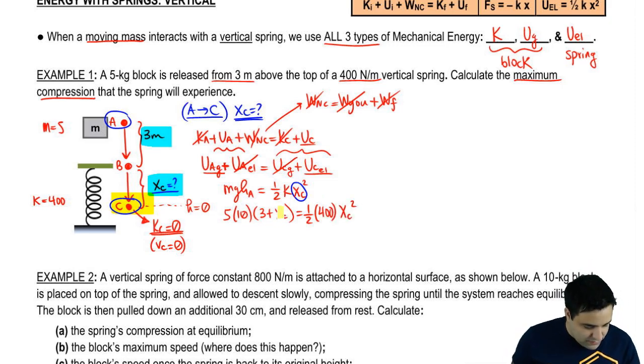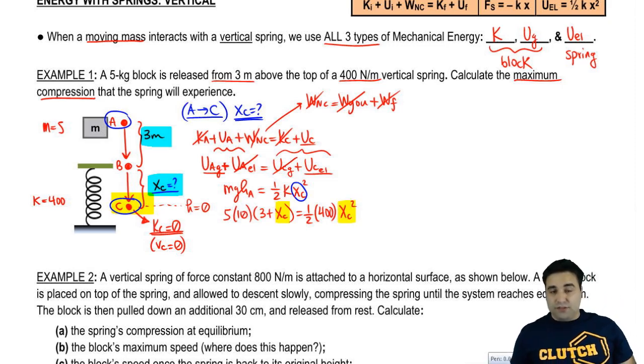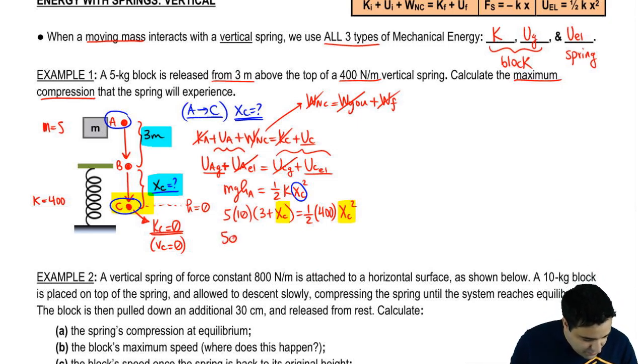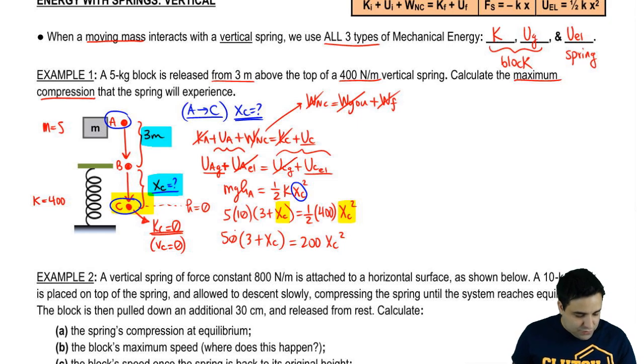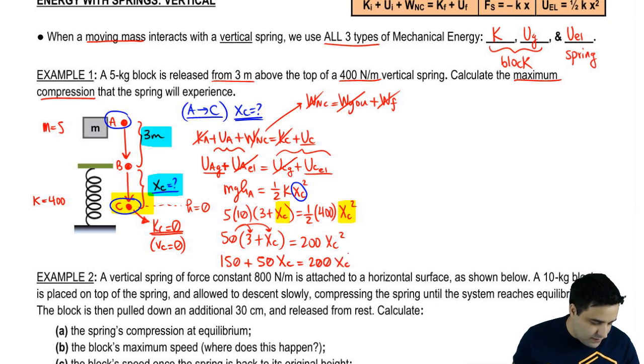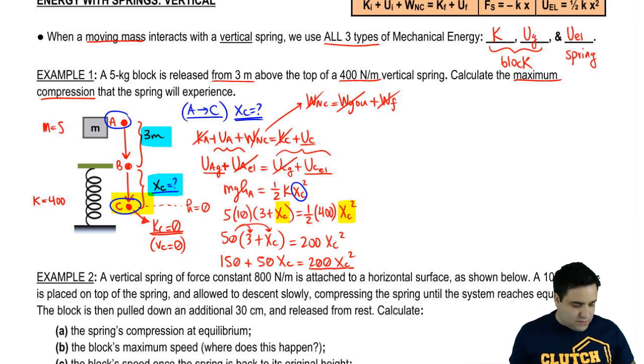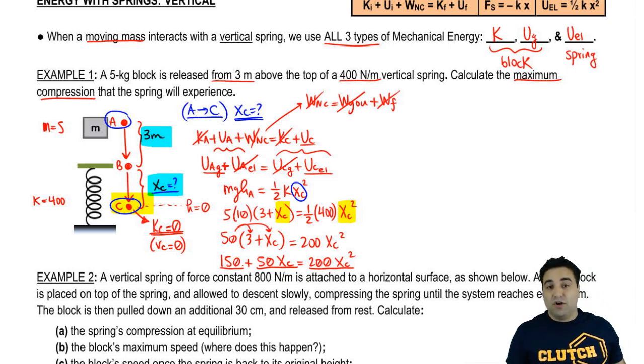I have half k is 400, and xc squared. So notice that I have xc twice, and that's okay, because it's just one unknown. So we can solve this. We're just going to have to make this look a little bit cleaner. So I have here 50 times 3 plus xc, and over here I have 200 xc squared. I have to distribute this 50 here. So it's going to be 150 plus 50 xc equals 200 xc squared. And you might notice what's happening here. I have one term with an x squared, one term with an x, and one term with no x whatsoever. This is the setup for a quadratic equation.